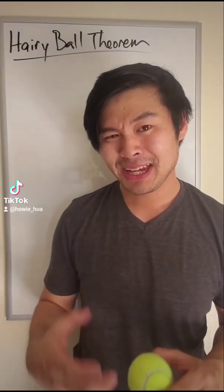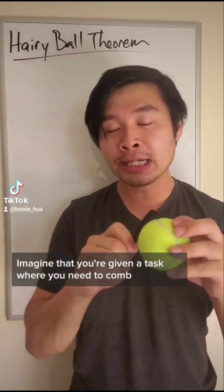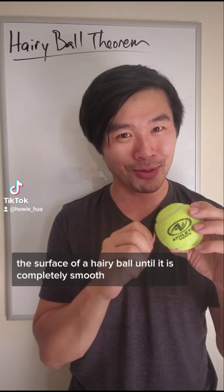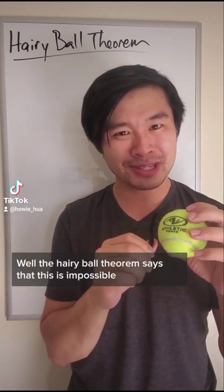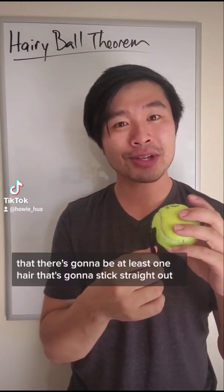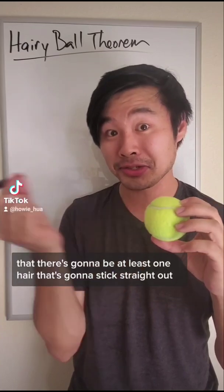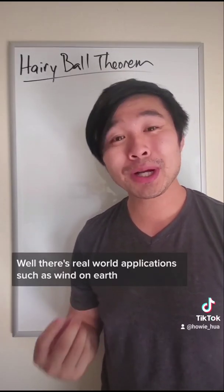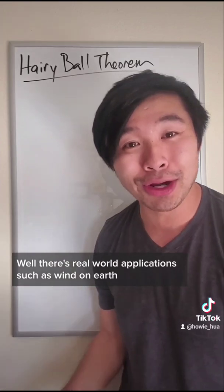Let's talk about the hairy ball theorem. Imagine that you're given a task where you need to comb the surface of a hairy ball until it is completely smooth. Well, the hairy ball theorem says that this is impossible, that there's going to be at least one hair that's going to stick straight out. Now, what makes the hairy ball theorem so interesting? Well, there's real world applications such as wind on earth.